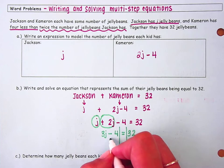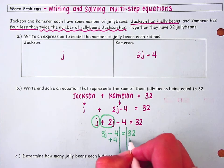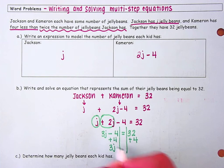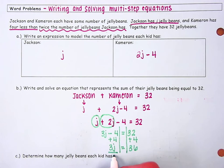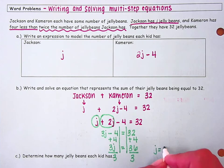I'm going to add 4 to both sides. So 3J is equal to 36, and then divide by 3 on both sides to get J is equal to 12.